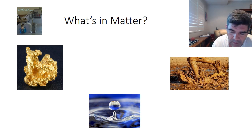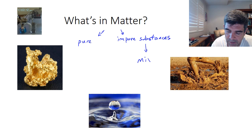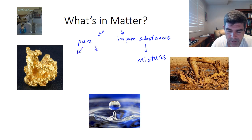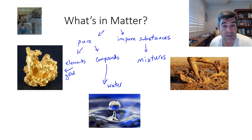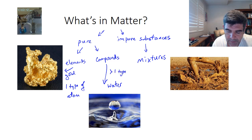So first of all, what's in matter? Matter is basically separated into two main groups: pure substances and impure substances. The impure substances are primarily going to be the topic of this particular video, because that includes the mixtures. Pure substances, which we'll deal with quite a lot in our chemistry course, are further broken down into two main groups: elements such as gold, and compounds such as water. Both are pure substances because they contain only one type of atom, or more than one type of atom in a fixed ratio. So elements are one type of atom, and compounds are more than one type in a fixed ratio.